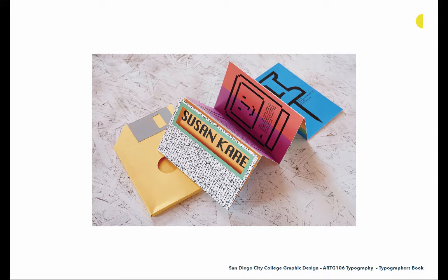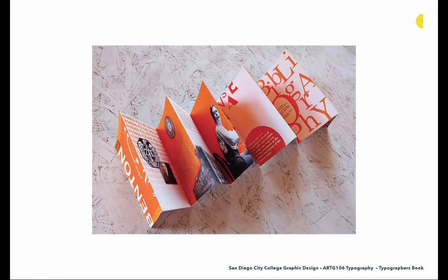There's a fun die cut on the cover that exposes the name. Here's one for Morris Fuller Benton — fun color palette with the orange, nice photography cut out on orange backgrounds. One benefit of the accordion fold book is that there's not really any binding or gutter or place that information will get lost. So you can easily have imagery or text go from one side of a spread to another, and I highly recommend exploring that.